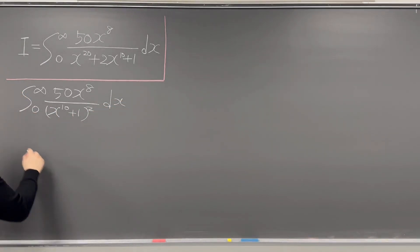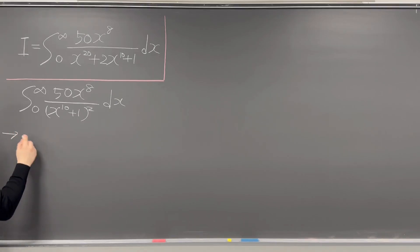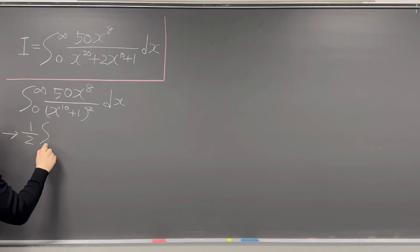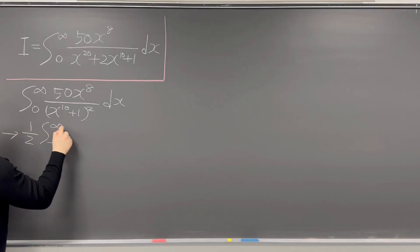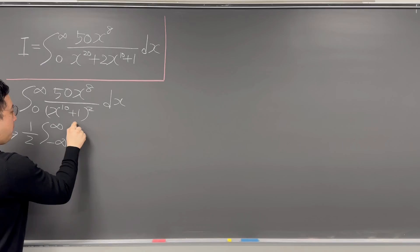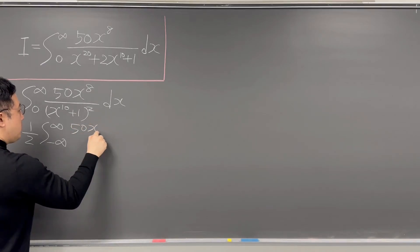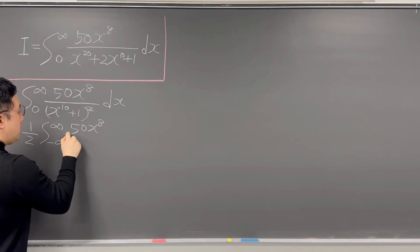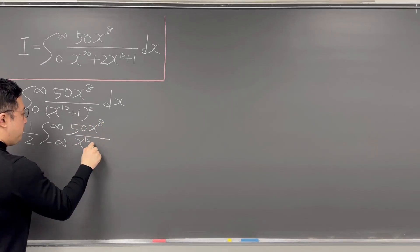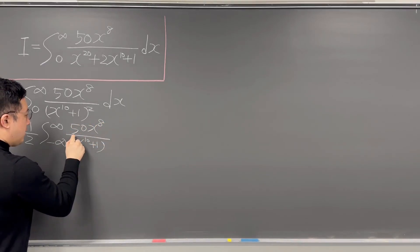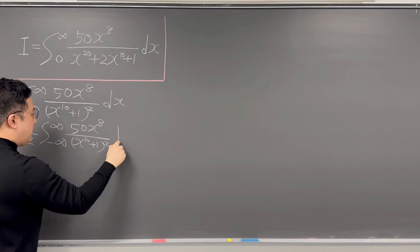Then we can rewrite this as 1 over 2 times integral from negative infinity to infinity of 50x to the power of 8 over x to the power of 10 plus 1, squared, and dx.